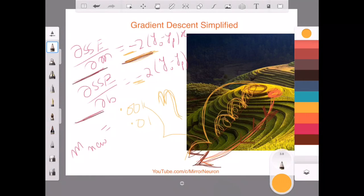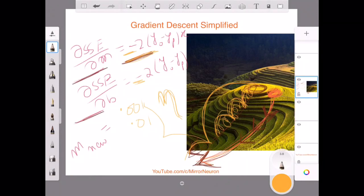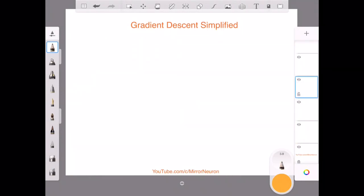So for the time being, then how my new values of m and b would look like and they would look like something like this. So m, the new value of m is nothing but the old value of m minus the learning rate times the change of sum of squared error because of m.